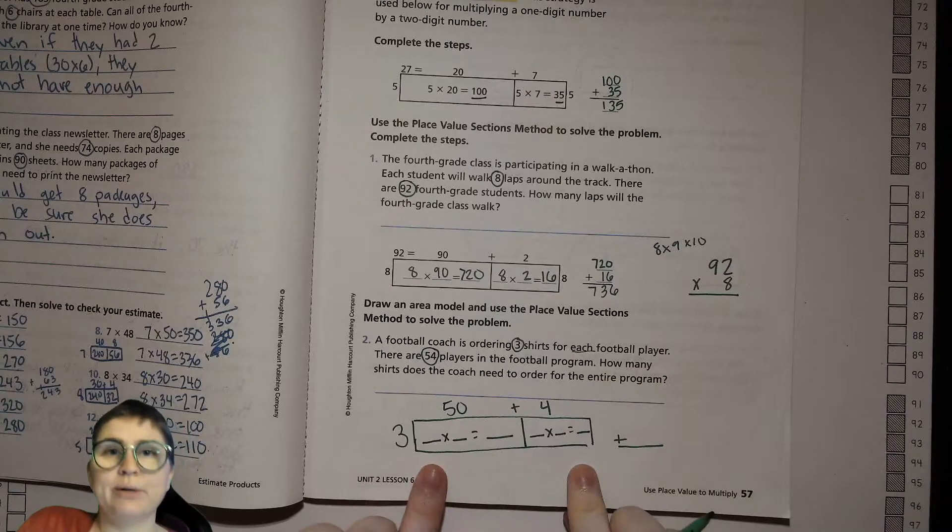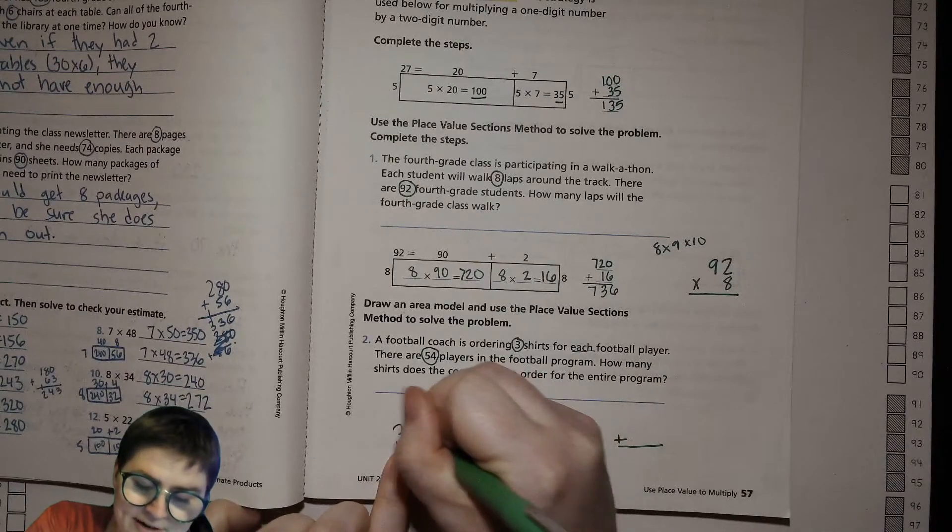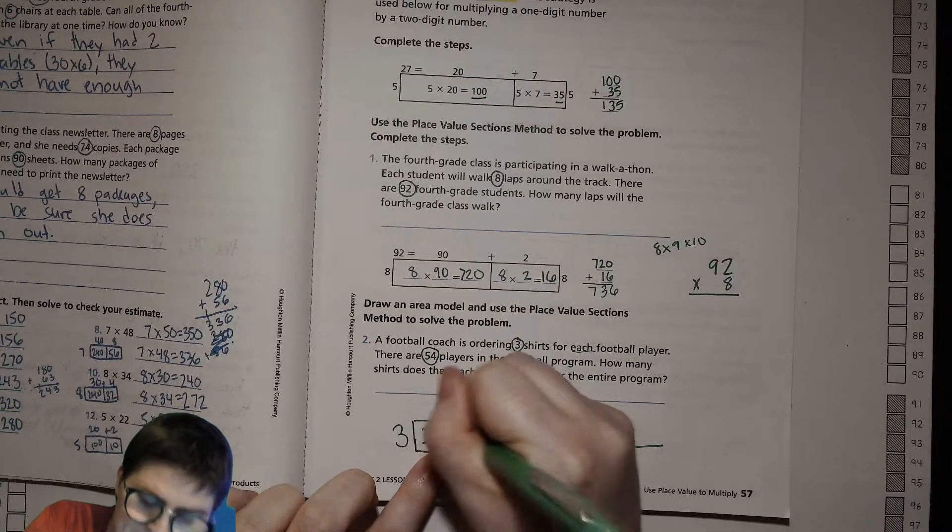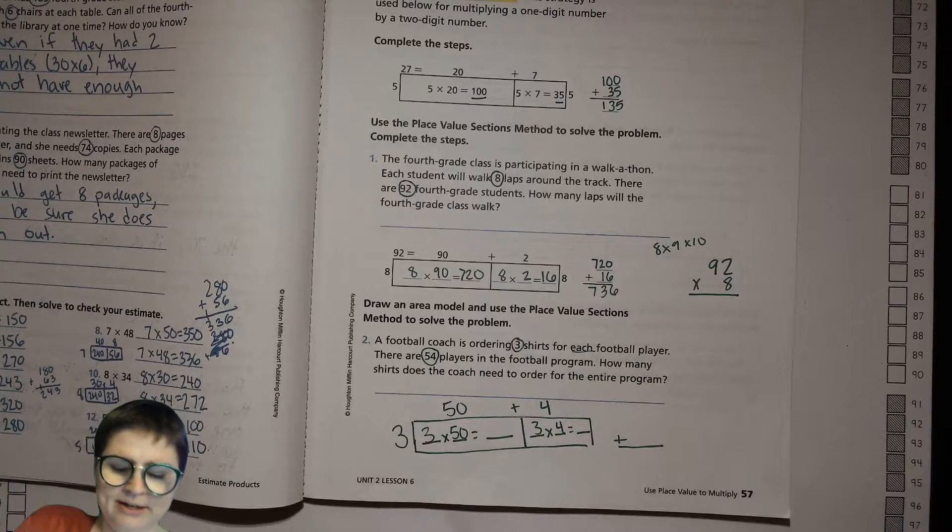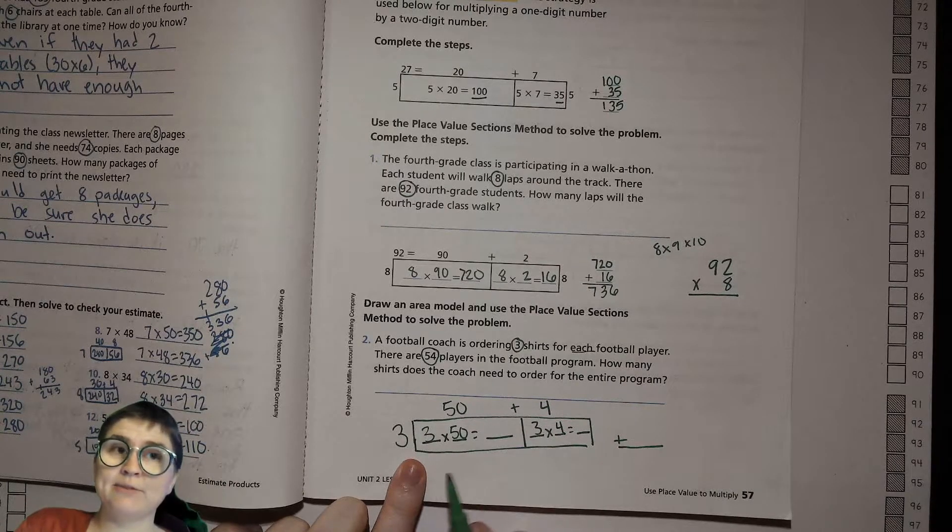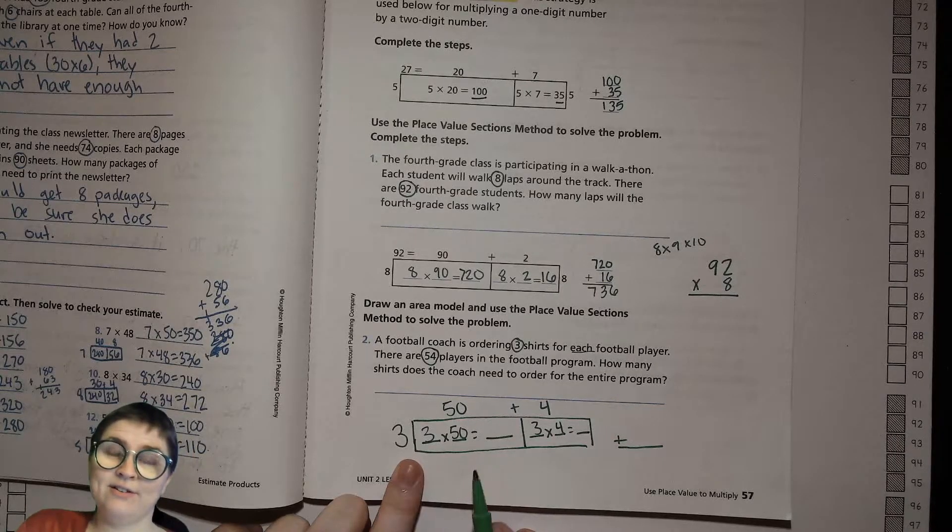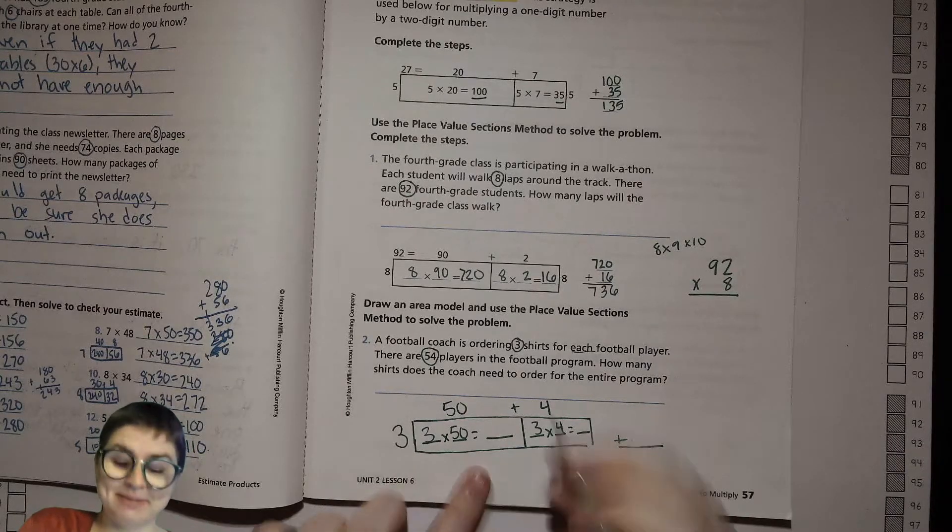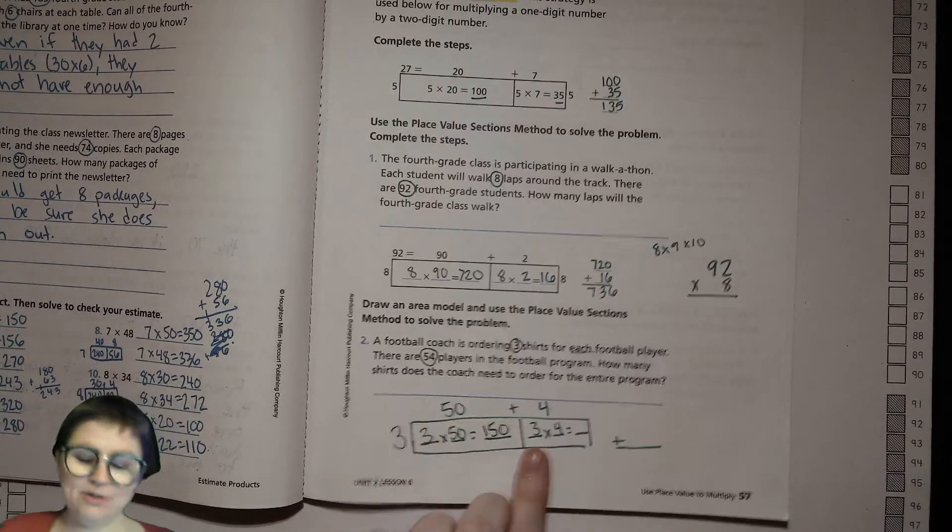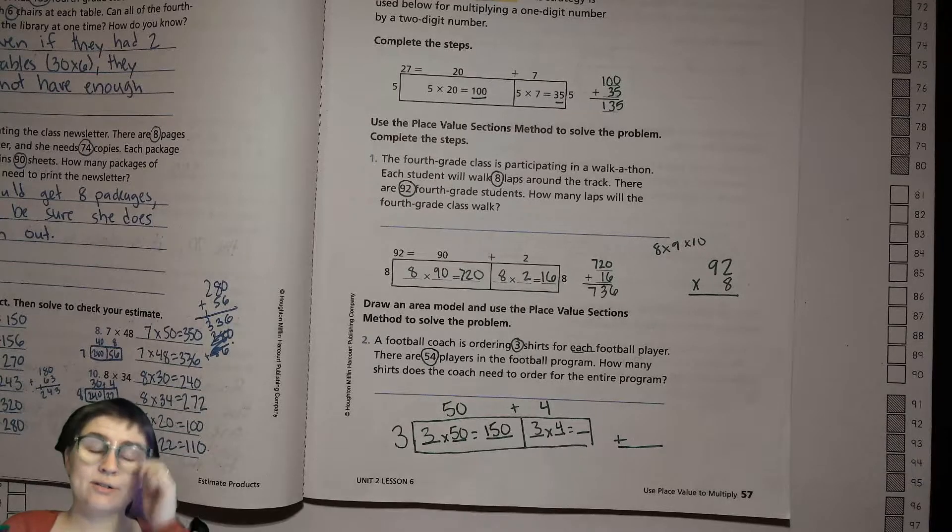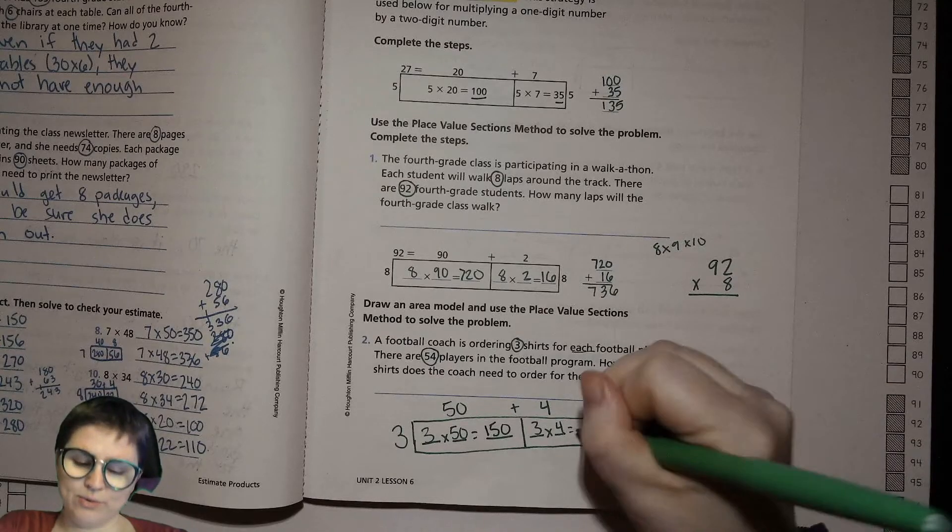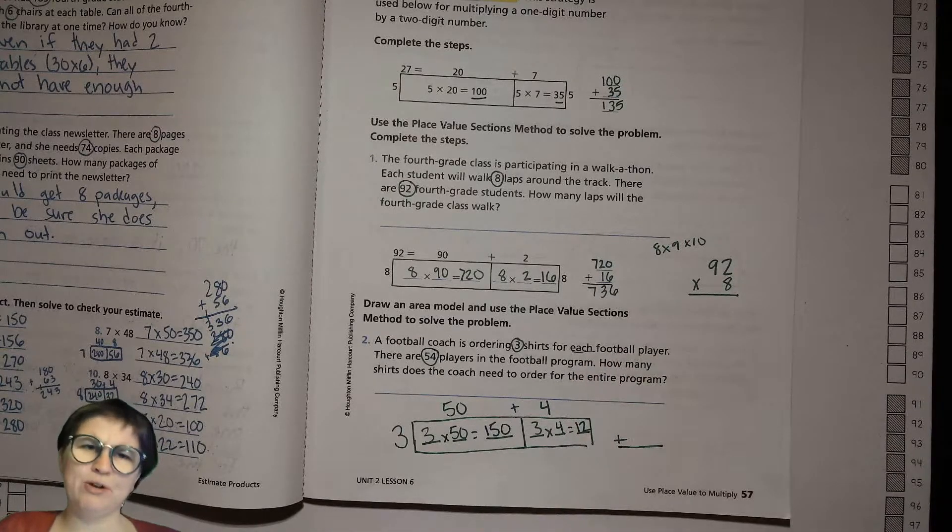Now, we're going to have this factor multiplied by both parts of 54. This is where the 50 goes and that is where the 4 goes. 3 times 50? Well, what's 3 times 5? 15, times that by 10: 150. And then 3 times 4 is 12.